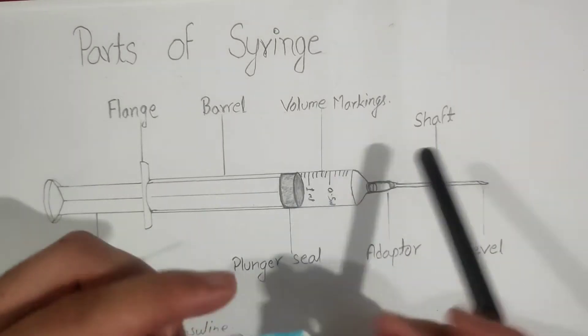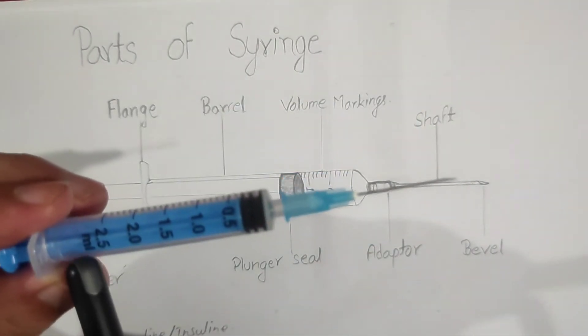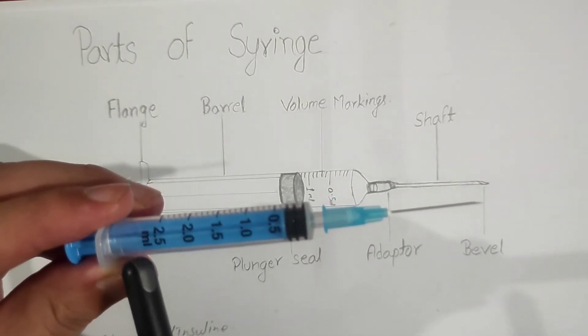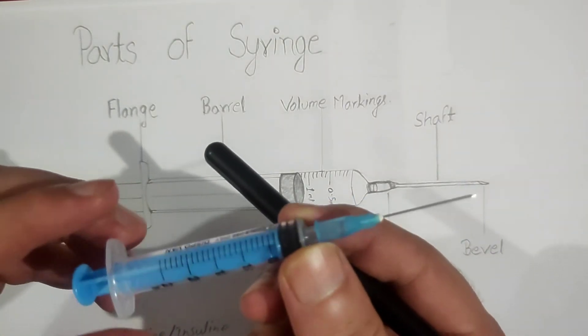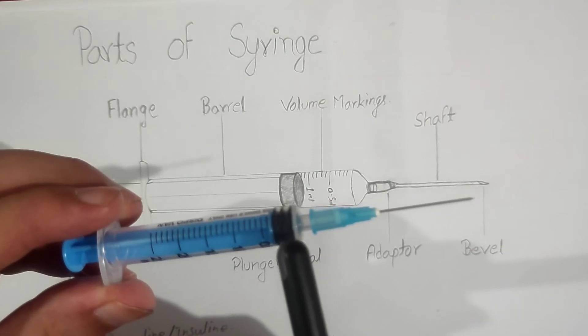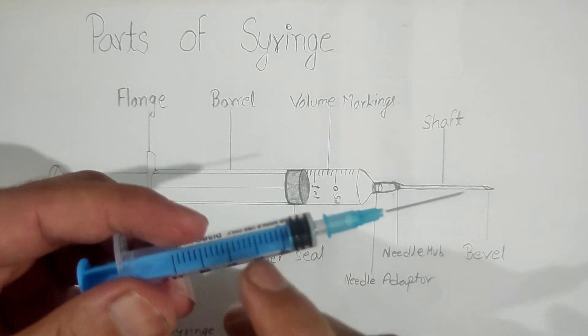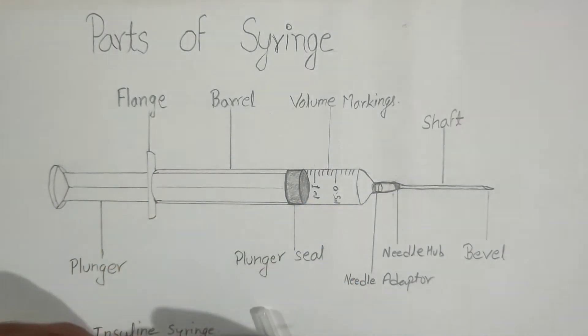drug are known as the volume markings. You can see here this is a 2.5ml syringe, so it is marked up to 2.5ml with gaps of 0.1ml. This indicates the volume of medicine in the syringe.